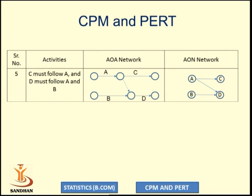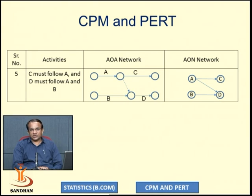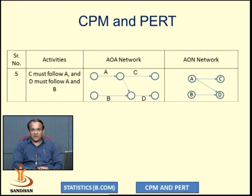Suppose C must follow A, and D must follow A and B. In an AOA network diagram, activity C is the successor for A, while D is the successor for A and B. In an AON network diagram, the activities are represented on a node.